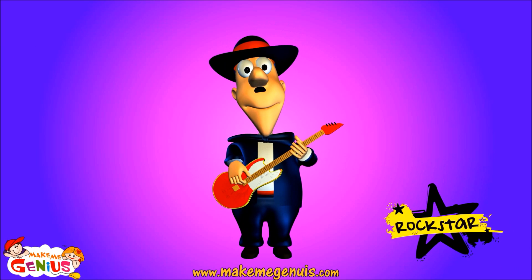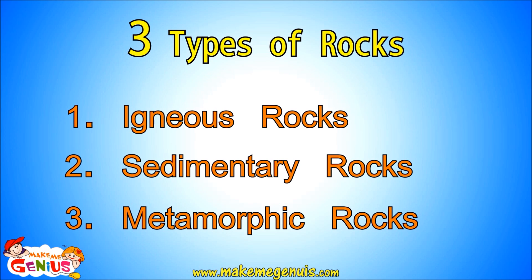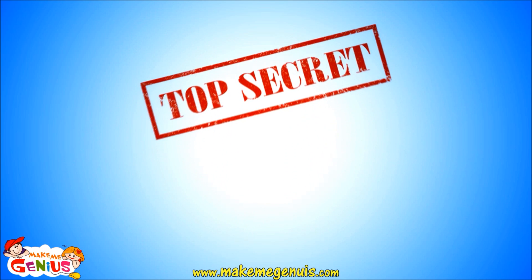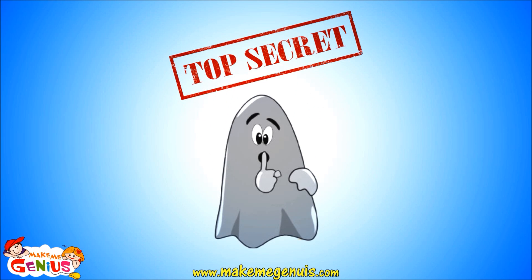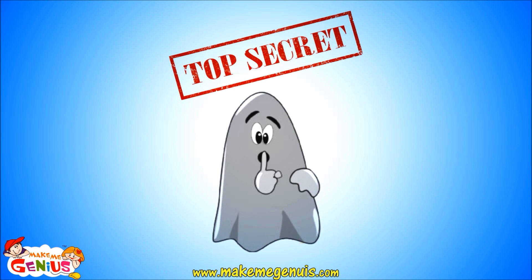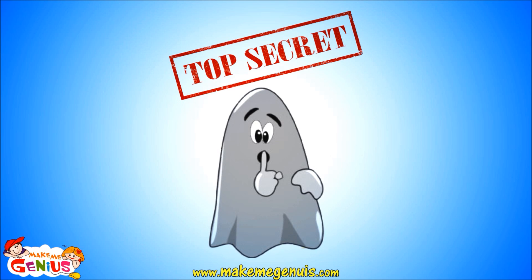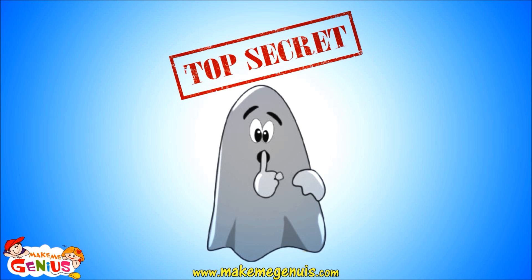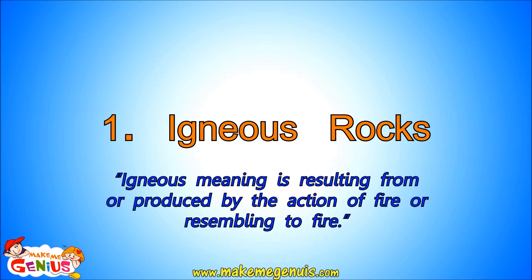First of all, please note there are three types of rocks: igneous rocks, sedimentary rocks, and metamorphic rocks. Now we will learn how these rocks are formed. Let me tell you a secret — if you know the meaning of igneous, sedimentary, and metamorphic, then understanding the formation of rocks becomes very easy. Let's first learn about igneous rocks.